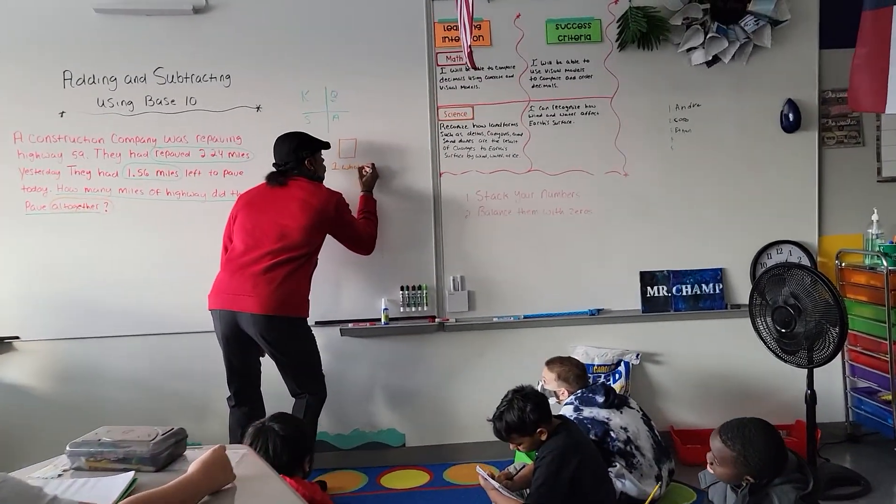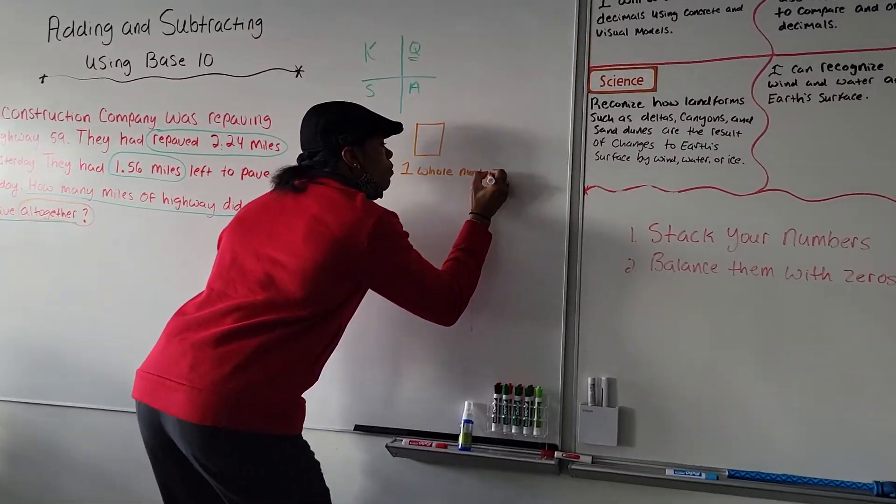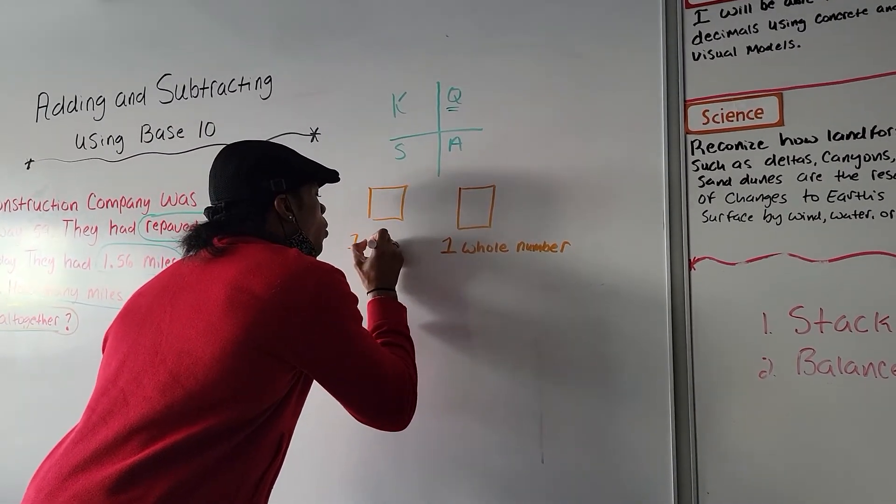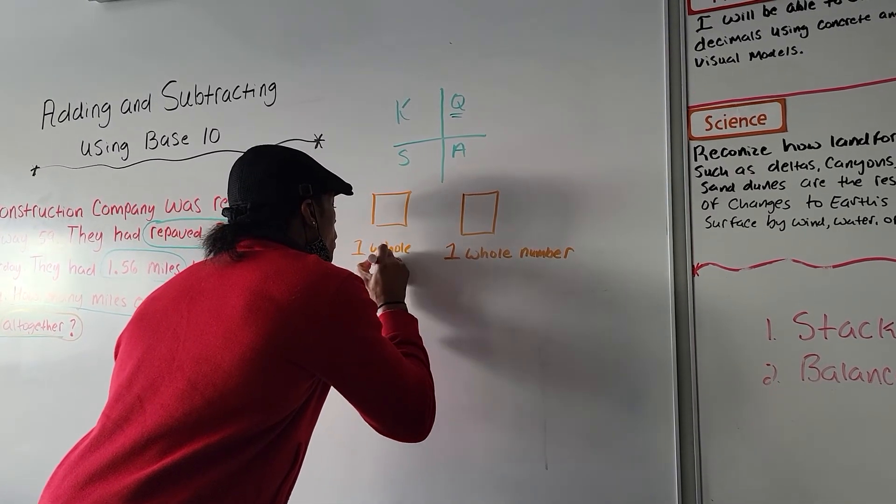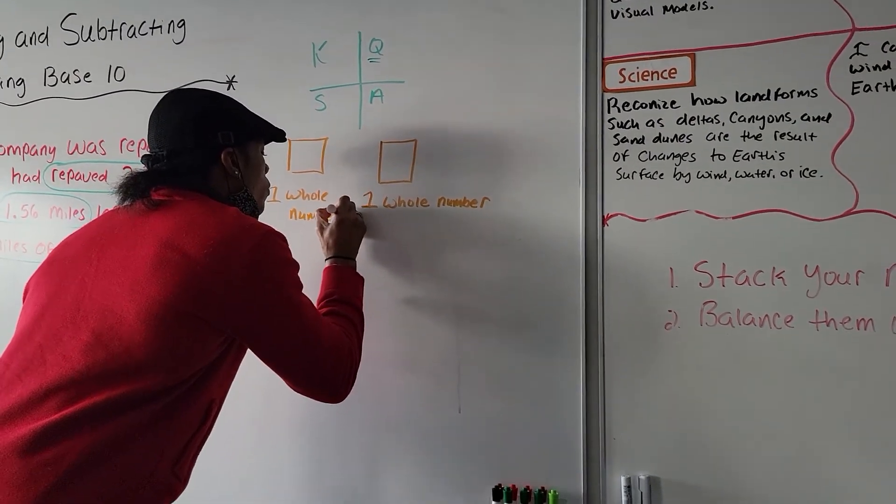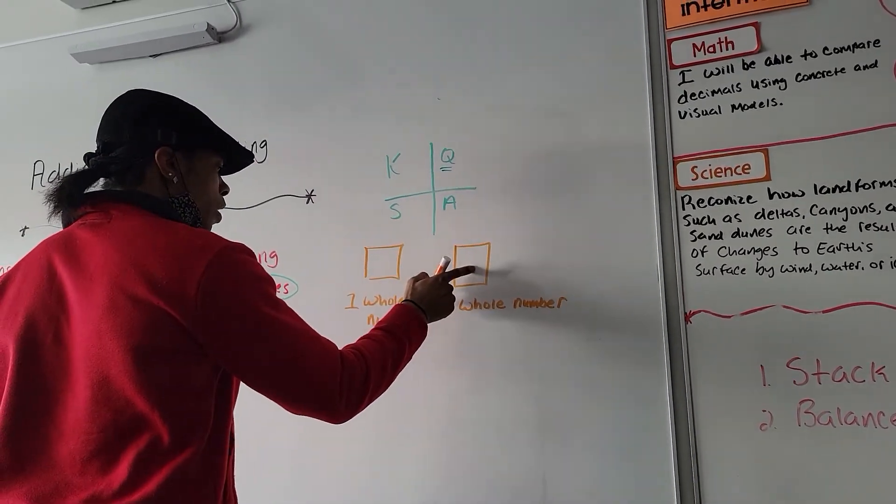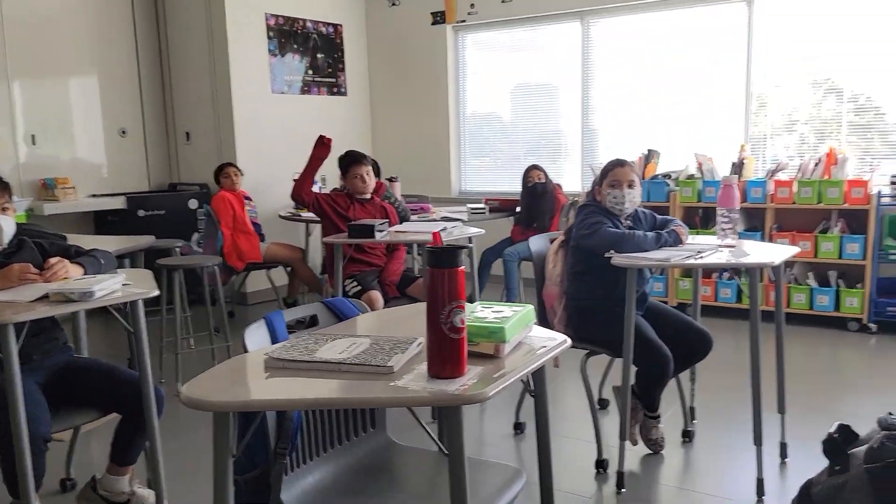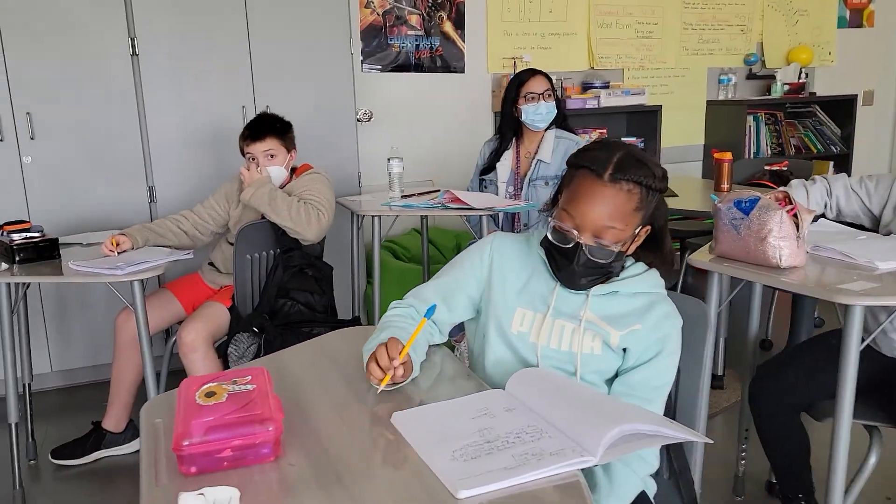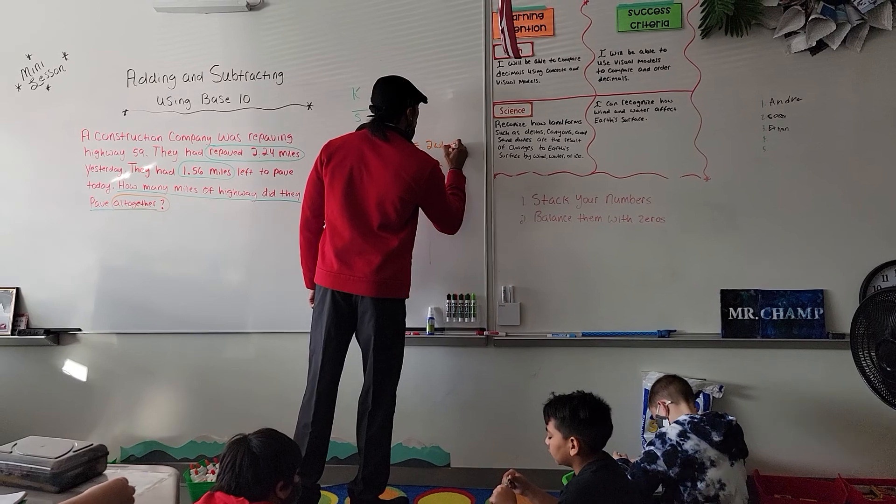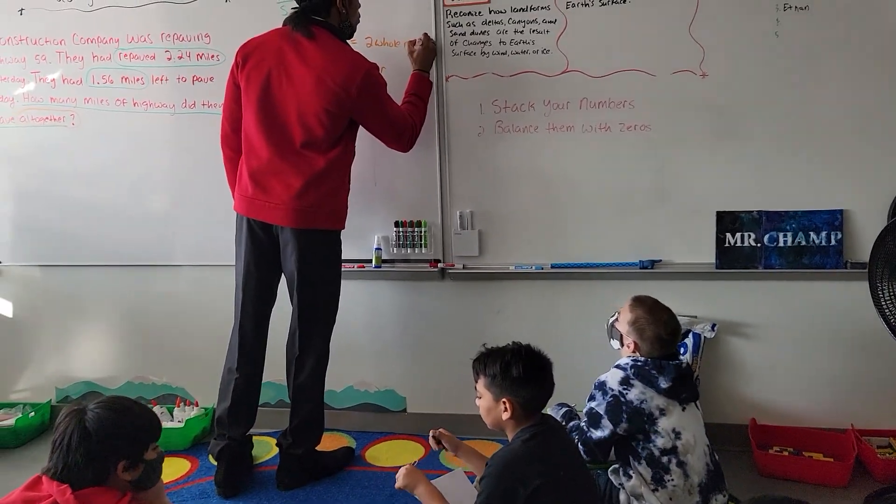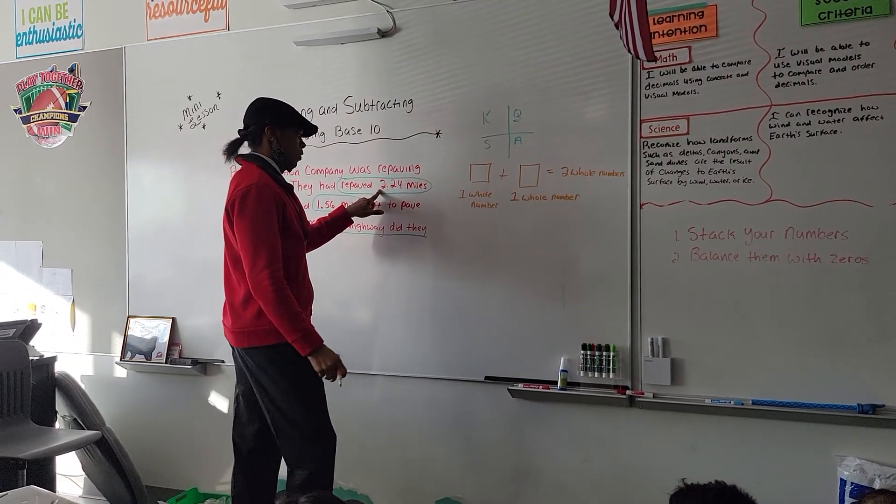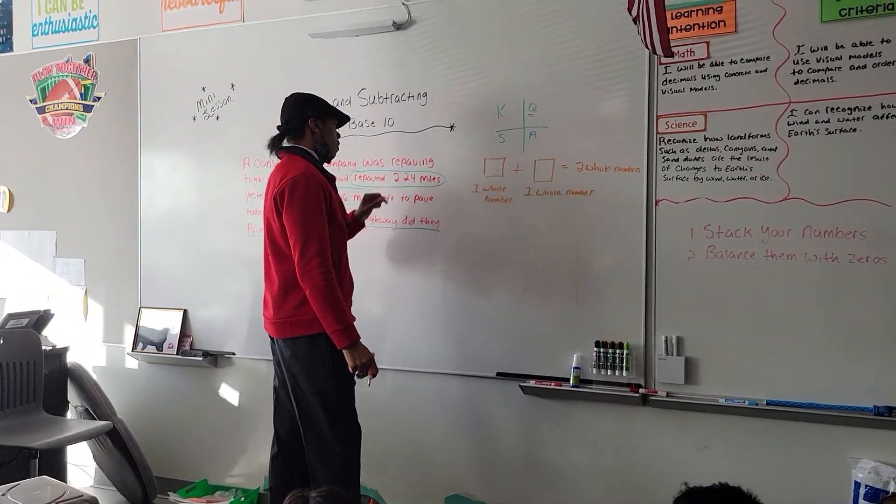So, if I have one whole number, one whole number, one whole number, and if I have two flats, this is another one whole number. So if I have one whole number plus one whole number, how much would that equal? Two whole numbers? Two whole numbers. Two whole numbers, okay? Okay, so if I have two whole numbers, that represents my two.